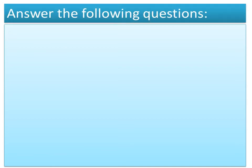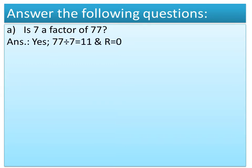Answer the following questions. Question A: Is 7 a factor of 77? The answer is yes, because if we divide 77 by 7, then quotient equals 11 and remainder equals 0. If the remainder is equal to 0, we can say that 7 is a factor of 77.